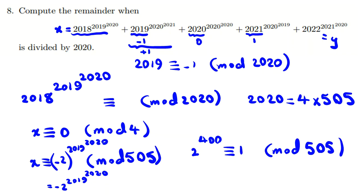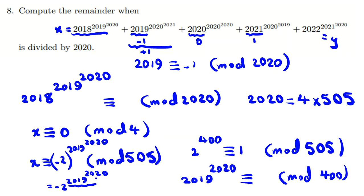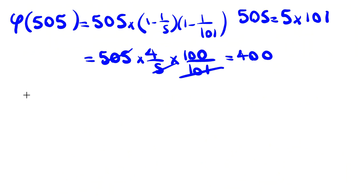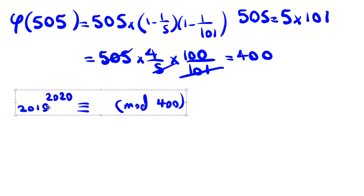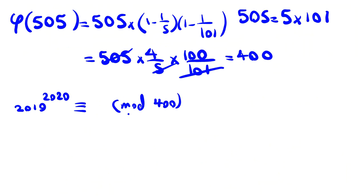So to find the remainder we need 2019^2020 mod 400, because every 400 twos multiplied together equal 1. So we need the exponent mod 400. Now we want to find 2019^2020 mod 400.